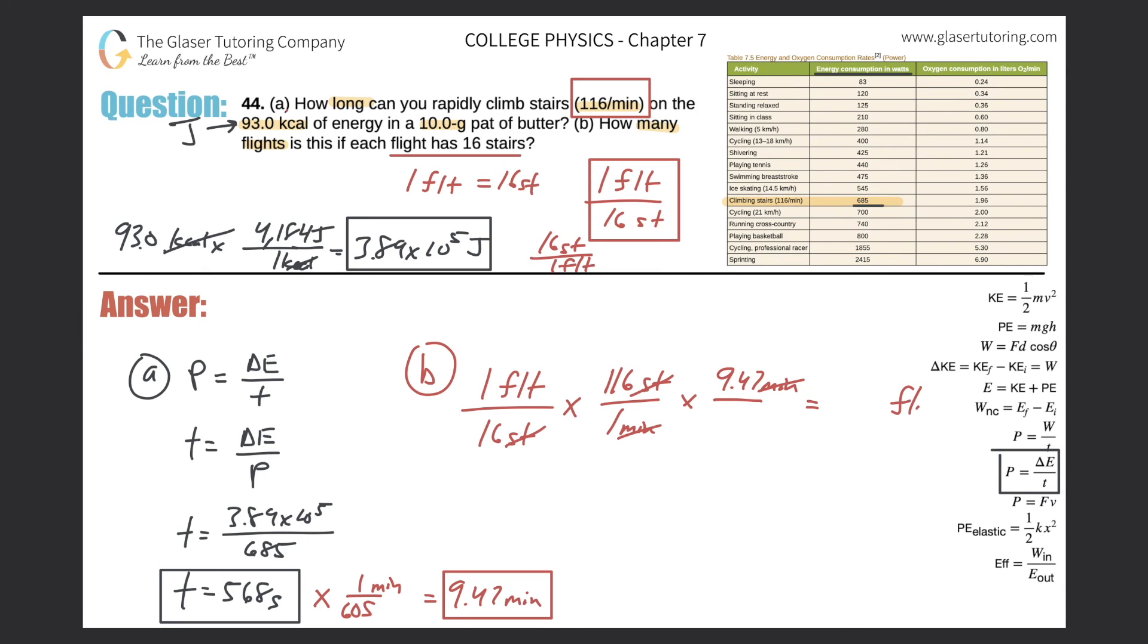So let's plug that in now. So flights, and just calculate. So this is simply 116 times 9.47 divided by 16. And it'd be about 68.7 or so. 68.7 flights. And that would be our final answer.